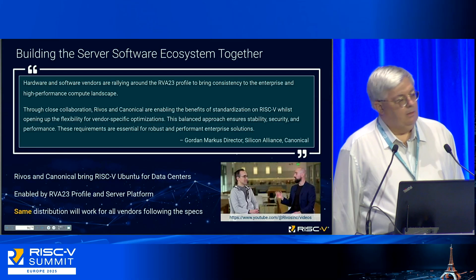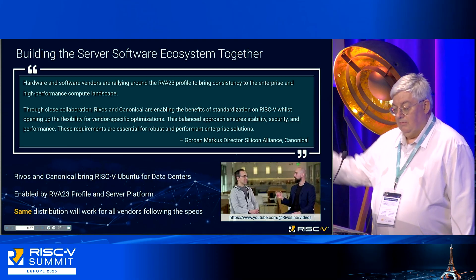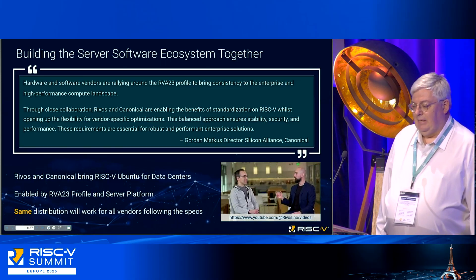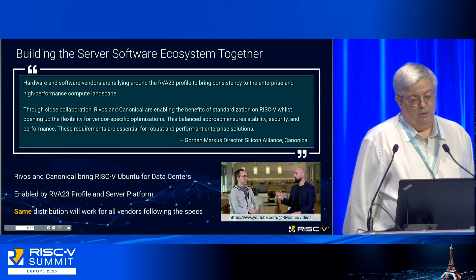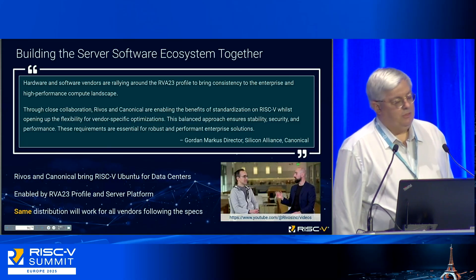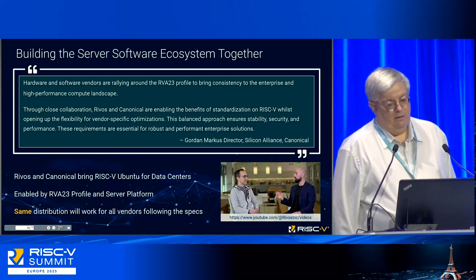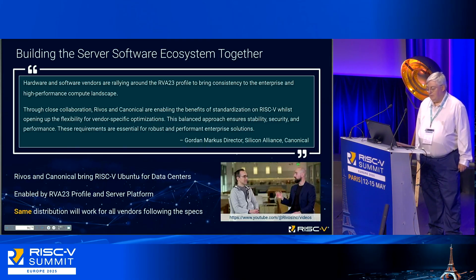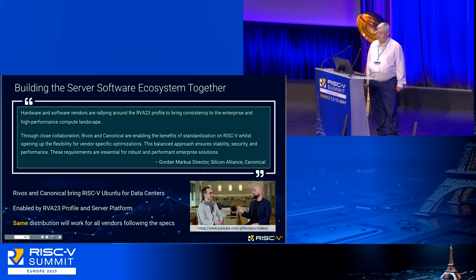This helps for the announcement we did with Canonical recently to bring the data center Ubuntu to RISC-V. This is enabled by both things I've been talking about — the RVA23 profile and the server platform. Although Ribos and Canonical make the announcement, the goal is a distribution that will work for all vendors of RISC-V servers who follow the profile and platform spec. If you want to understand more, there is a video released on Canonical's site and on our YouTube site — the six-minute version is better than the two-minute version.